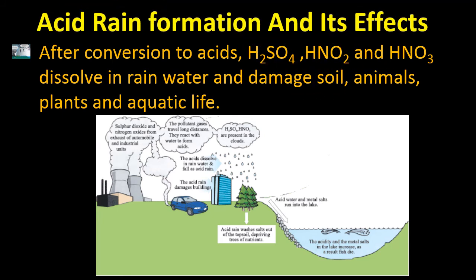After conversion to acids — sulfuric acid, nitrous acid, and nitric acid — they dissolve in rain water and damage soil, animals, plants, and aquatic life. This diagram shows sulfur dioxide and nitrogen oxides from the exhaust of automobiles and industrial units. The pollutant gases travel long distances, react with water to form acids present in clouds, which then dissolve in rain water and fall as acid rain.